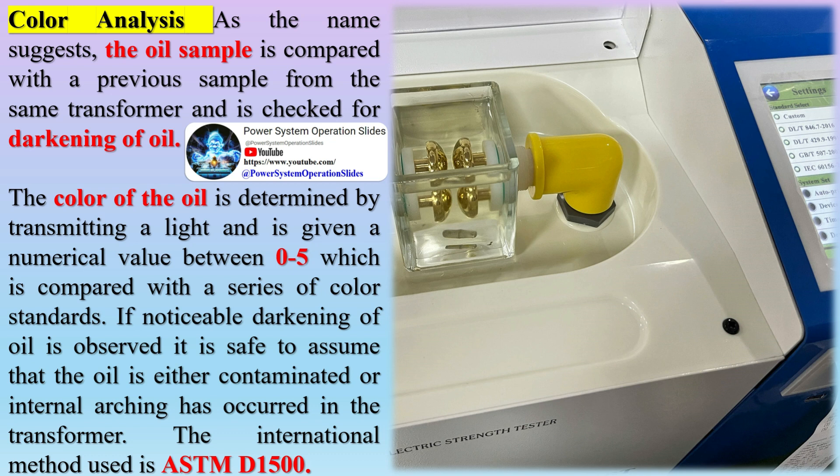Color analysis: the oil sample is compared with a previous sample from the same transformer and checked for darkening. The color is determined by transmitting light and is given a numerical value between 0 to 5, compared with a series of color standards. If noticeable darkening is observed, it is safe to assume that the oil is either contaminated or internal arcing has occurred. The international method used is ASTM D1500.